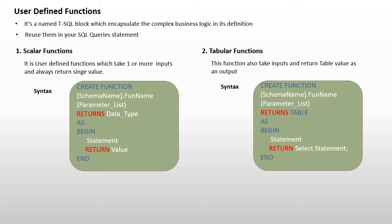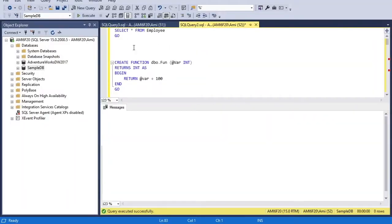Both types share the same syntax. It starts with CREATE FUNCTION, then the function name along with the schema name, then the parameter list. After this we mention what type of value the function will return. In a scalar function we define data types like integer, string, or date, but in a tabular function we always return a TABLE. We write a BEGIN and END block within which we implement our business logic, then finally return the value. In a table-valued function we return a SELECT statement.